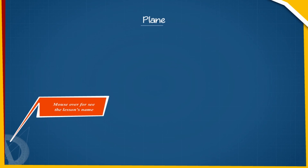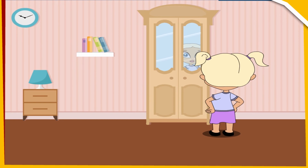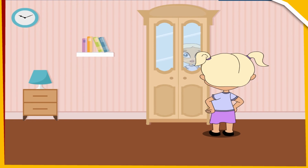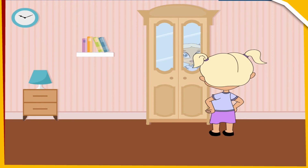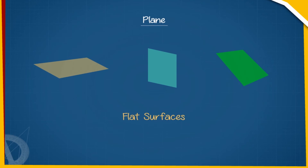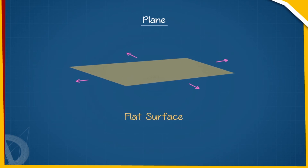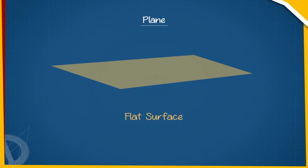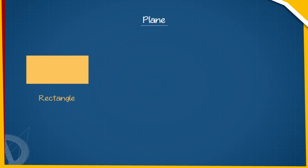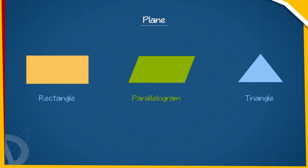Plane. Tina is looking at the mirror on the cupboard top and observes that it is a flat surface. The walls, floor, and ceiling of the room are also flat surfaces. All such flat surfaces are parts of planes. A plane is a flat surface which extends endlessly in all directions.